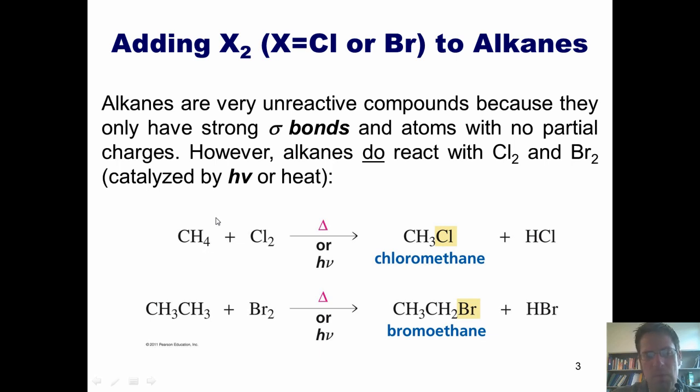I can take, for example, methane, which under normal circumstances doesn't undergo organic reactions very easily, and treat it with chlorine gas, light or heat, and replace one of the hydrogen atoms with a chlorine atom. Similarly, I can take ethane gas and treat it with bromine and light or heat, and replace one of the hydrogens also with a bromine. How in the world does this happen? Well, I'll give you a hint. It involves a reaction mechanism that's totally radical.